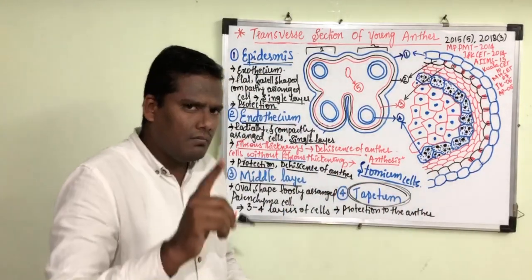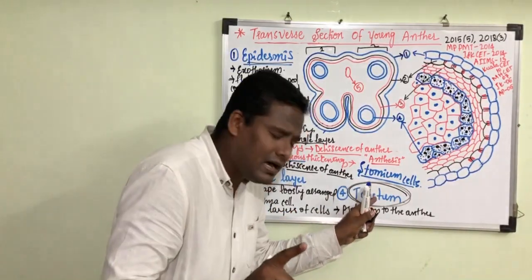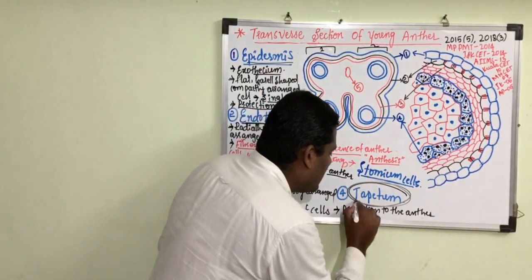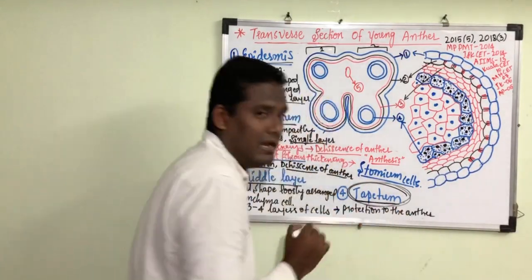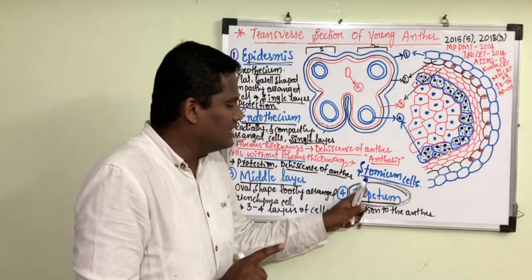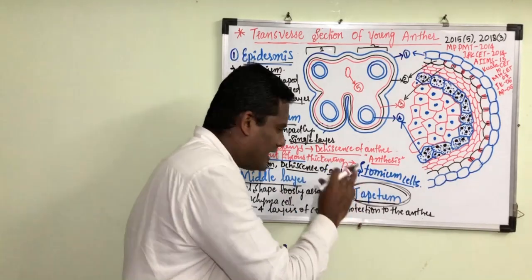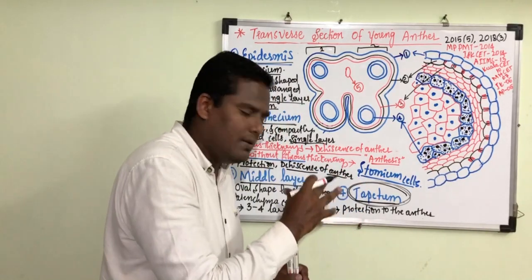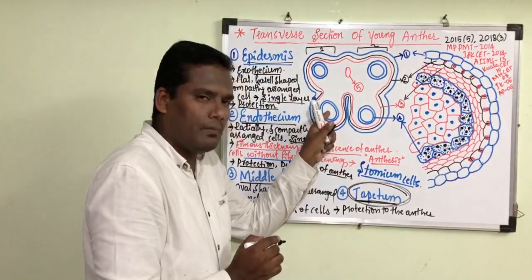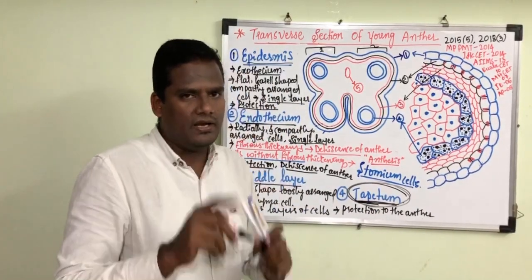The last layer is the tapetum. As mentioned, it is a very very important layer. Most questions in competitive exams appear from this tapetum layer because it has very special kinds of cells that are helpful in various important functions in the anther and in the development of the pollen grain. We will discuss this layer in detail in the next video. Thank you.